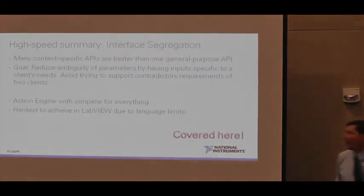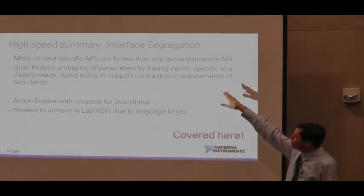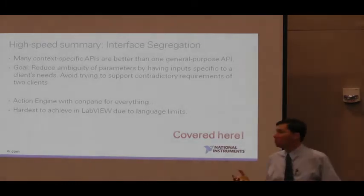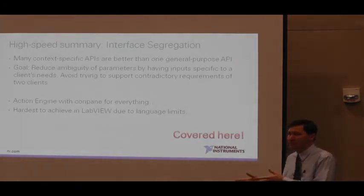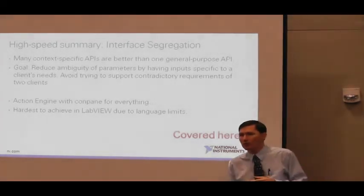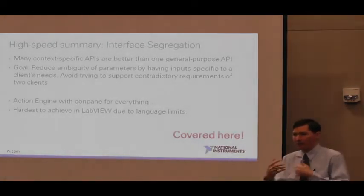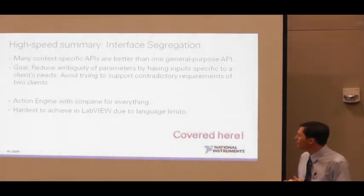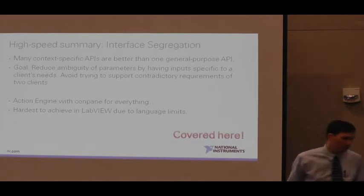Now, these are the two we're covering today. Interface Segregation: many context-specific APIs are better than one general-purpose API. The goal is to reduce the ambiguity of parameters by having inputs specific to one client's needs. You don't want to have a lot of spare inputs that lots of people are using. This occurs frequently with LV2-style globals where you start piling everything onto the connector pane to support every possible method. It's the hardest to achieve in LabVIEW due to language limits.